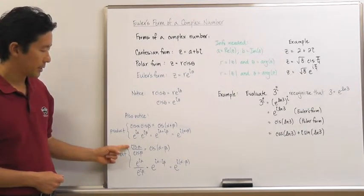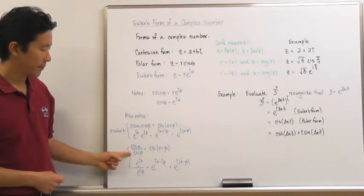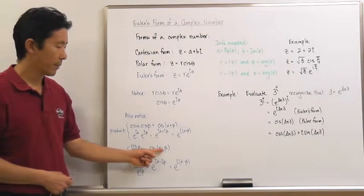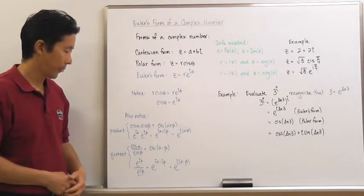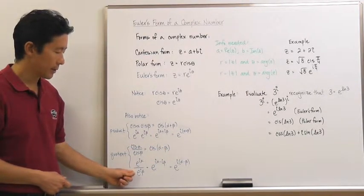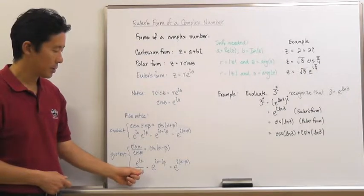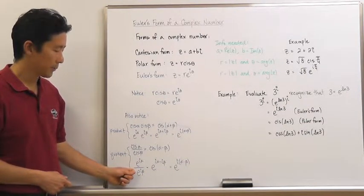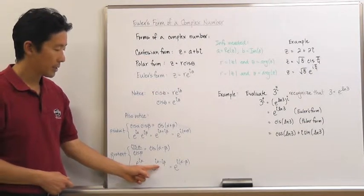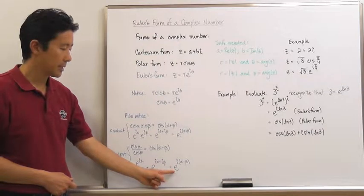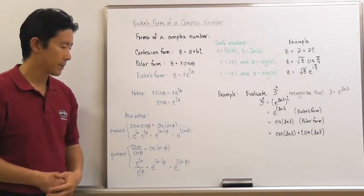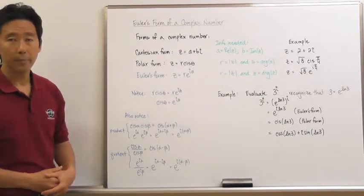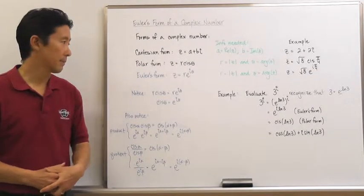The quotient: cis alpha divided by cis beta gives us cis of alpha minus beta. We can take a look at the associated Euler's form for the same quotient, and notice that we'll have consistency there with the arguments as well. It's very important to notice that we have consistency.